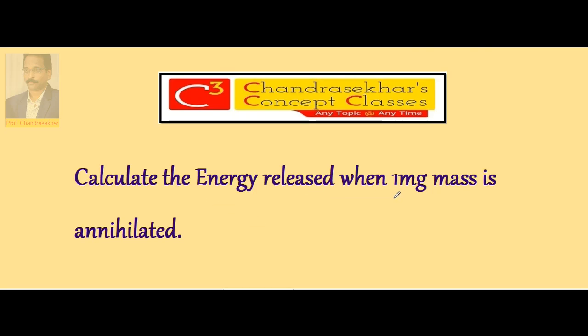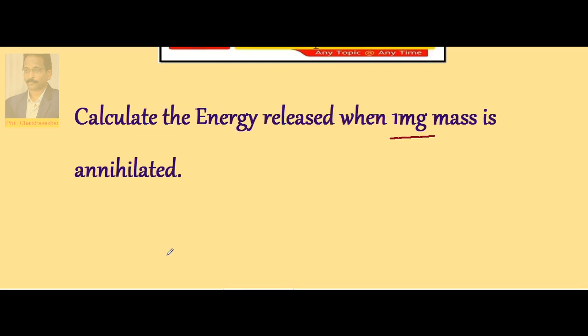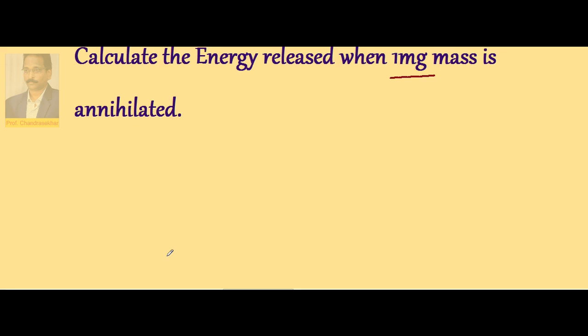Calculate the energy released when 1mg mass is annihilated. 1mg mass is completely converted into energy. How much energy is released? Let us use E is equal to mc square.